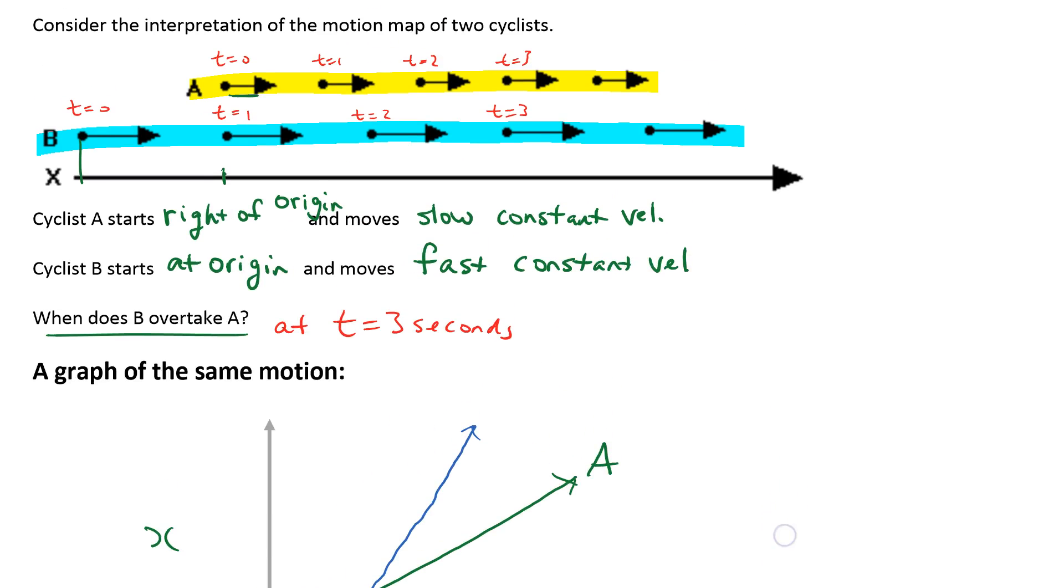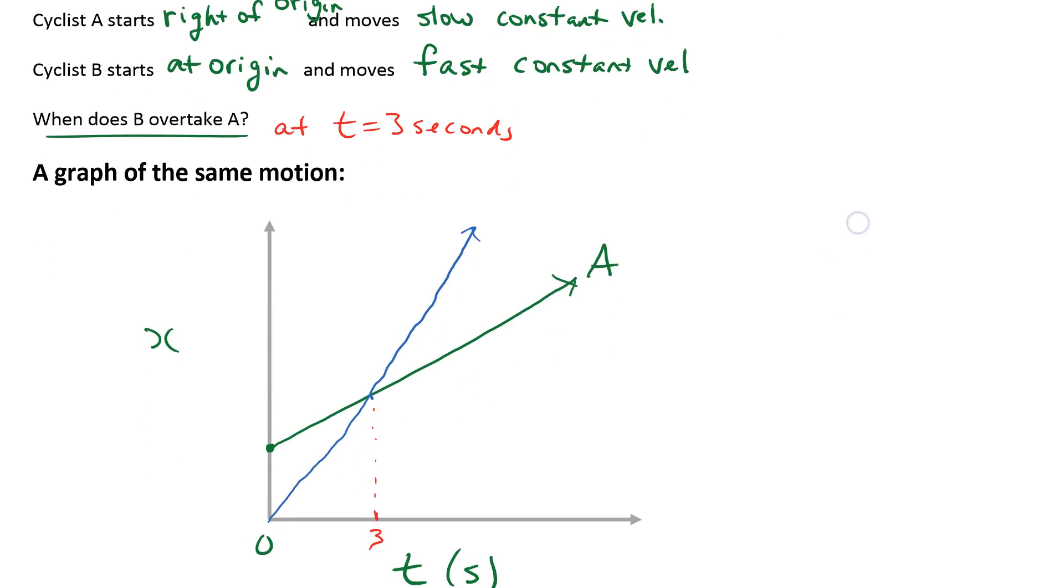So we have a motion map of the motion. We have a graph of the motion. Oh, this is B.